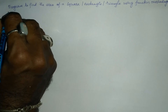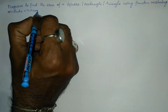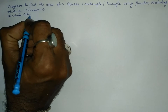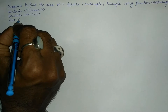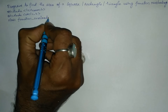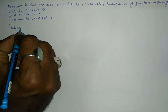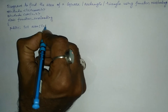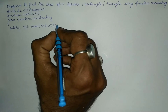Let us write the preprocessor directives: #include <iostream.h> and #include <conio.h>. Then we will define a class with the name function_overloading, with a curly open brace. Here I am going to write public colon, and int area(int a).